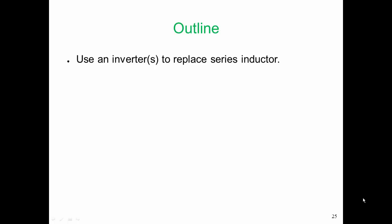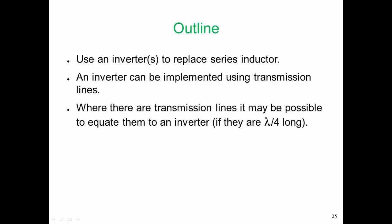The outline is that we can use an inverter to replace the series inductor, and the inverter can be implemented using transmission lines. In fact, anywhere we see a transmission line, there's a reasonable chance that we will see the action of an inverter, and that is indeed what we're going to achieve with our parallel coupled lines. It's not for certain that we will be able to replace the transmission lines by inverters or, going the other way around, replace inverters by transmission lines, but very often we can.